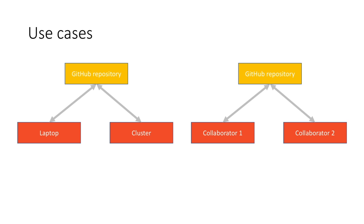While the version control system in Git is fully distributed, it can be convenient to use GitHub as a meeting point. Using GitHub makes it easy to keep various copies of your code synchronized, such as between your laptop at home and your computing cluster. GitHub is also a great way to share code with collaborators who work at different institutions and therefore wouldn't have access to your local computer systems.